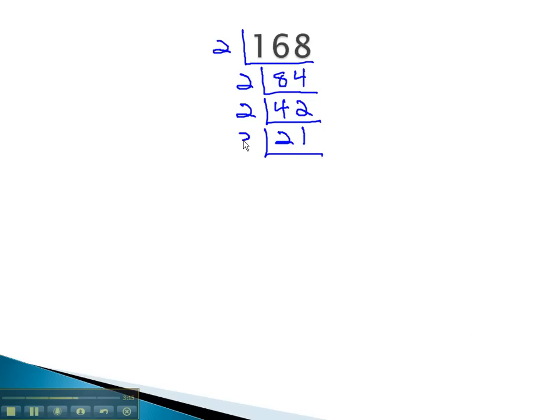21 is divisible by 3, 7 times, and 7 is divisible by 7, 1 time.